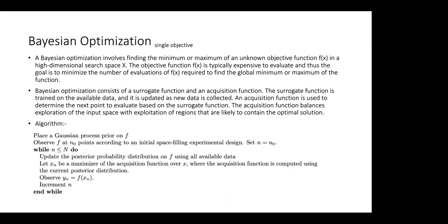Bayesian optimization uses two functions: a surrogate function and an acquisition function. We start with a specific set of initial data points, fit a function on those, then find the posterior distribution. The acquisition function uses that posterior to find the next point most likely to decrease the cost further.